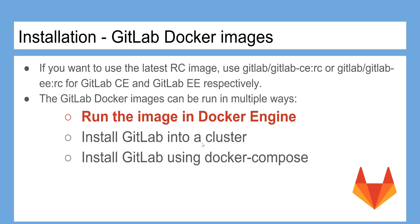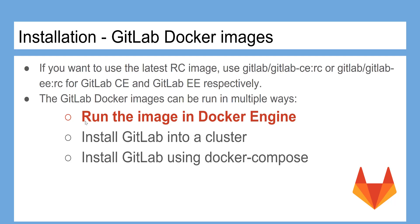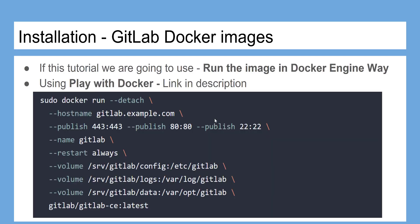The GitLab Docker images can be run in multiple ways: run the image in Docker engine, install GitLab into a cluster, or install GitLab using Docker Compose. In this tutorial we are going to use the 'run the image in Docker engine' approach, and we are going to use Play with Docker to accomplish the installation. If you don't know about Play with Docker, the link is in the description.